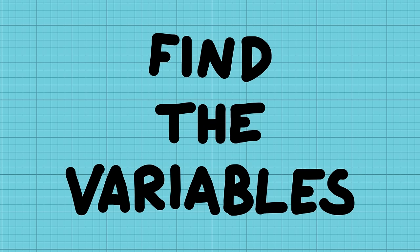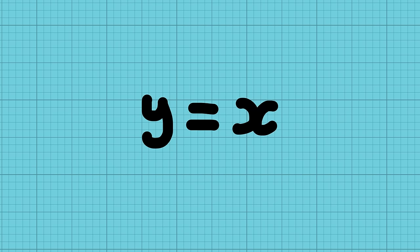The first rule is you need to find out where these things called variables are. A mathematical equation describes a relationship between things. The most common form is something equals something else.